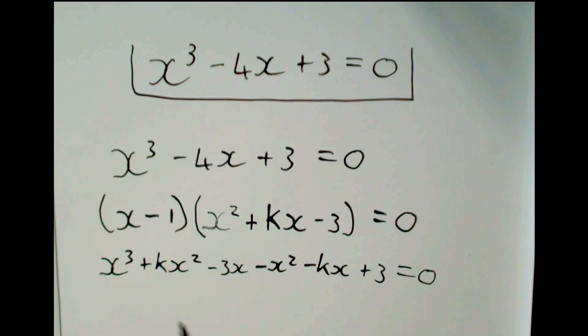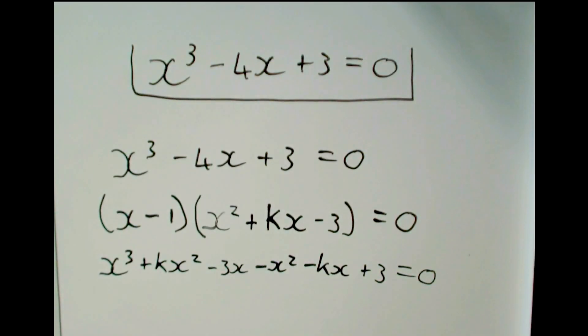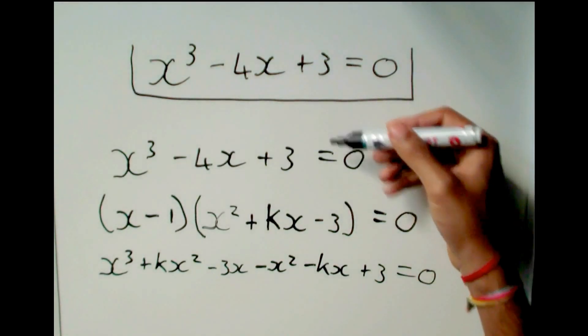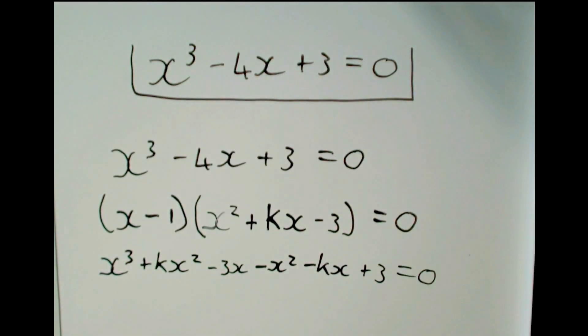So we need this to be the same as this for the equation to work. Because that is what we started with. After we factorize and multiply out, we should end up with what we started with. That is how we are going to find out what K is.